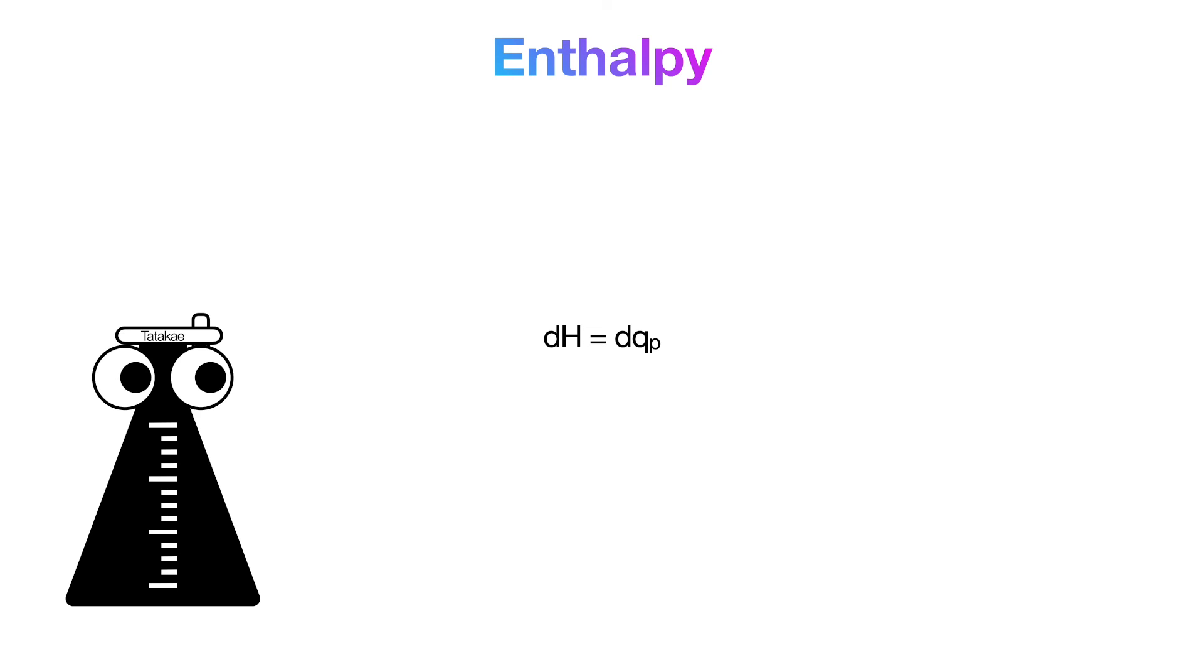So the heat at constant pressure is the enthalpy. This is why enthalpy was created, because it's so much more convenient to use enthalpy than internal energy in everyday situations where the pressure outside is constant, not the volume.